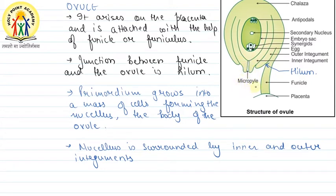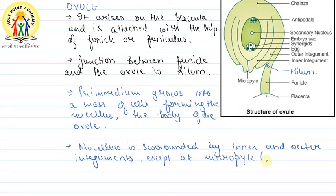The integuments cover the ovule completely except at one part, called the micropyle. The micropyle is a small opening where the integuments are not covering. This is visible in the diagram.